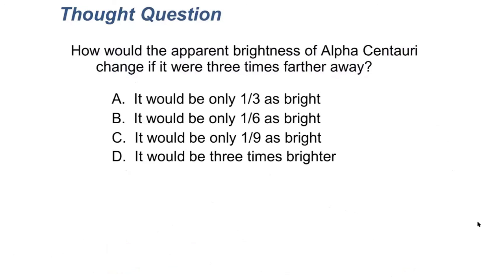Here's a thought question for you. Alpha Centauri is the closest star to us — not visible from the northern hemisphere at least in Geneseo, but it is a bright star in the southern hemisphere. The question is: how would the apparent brightness of Alpha Centauri change if it were three times further away? Would it be only a third as bright, only a sixth as bright, only a ninth as bright, or three times brighter? Go ahead and think about this, write it down, and we'll come back and talk about it.